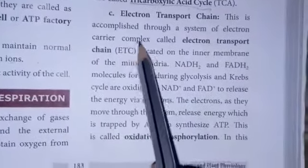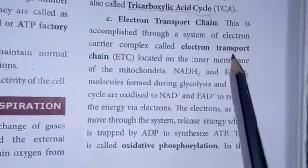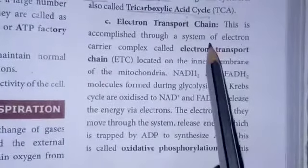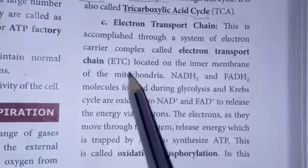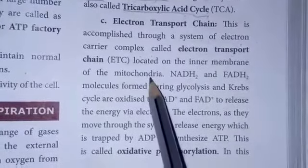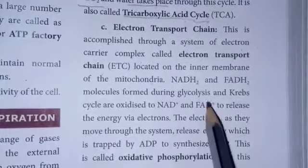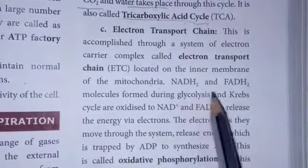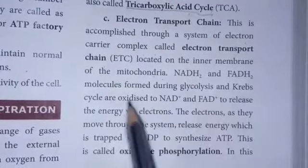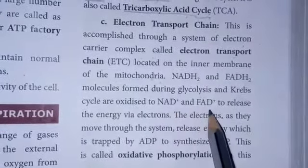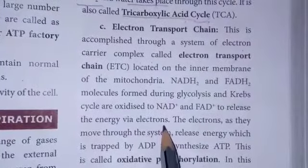This is accomplished through a system of electron carrier complexes called the electron transport chain. It is located on the inner membrane of the mitochondria. The NADH₂ and FADH₂ molecules formed during glycolysis and the Krebs cycle are oxidized to NAD and FAD to release energy via electrons.